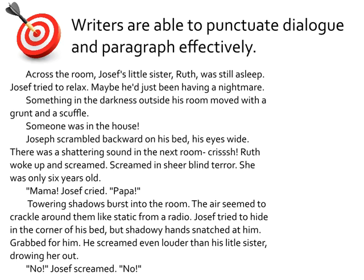Across the room, Joseph's little sister, Ruth, was still asleep. Joseph tried to relax. Maybe he'd just been having a nightmare. Something in the darkness outside his room moved with a grunt and a scuffle. Someone was in the house. Joseph scrambled backward on his bed, his eyes wide. There was a shattering sound in the next room. Krish! Ruth woke up and screamed — screamed in sheer blind terror. She was only six years old.